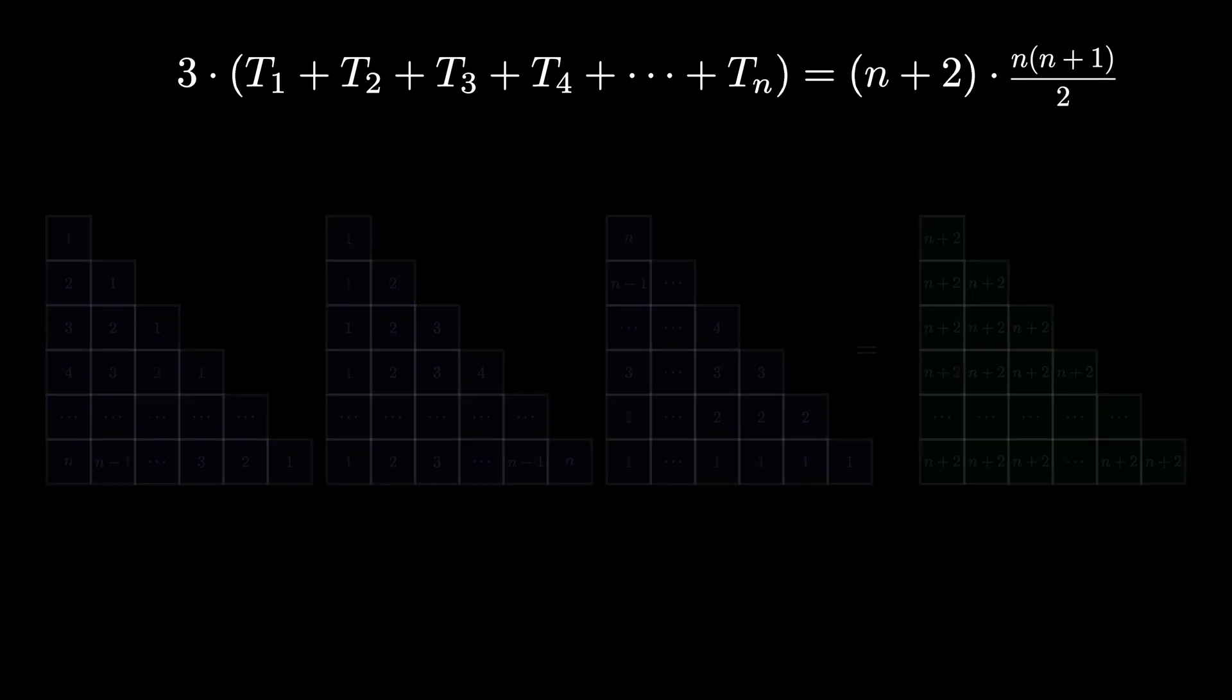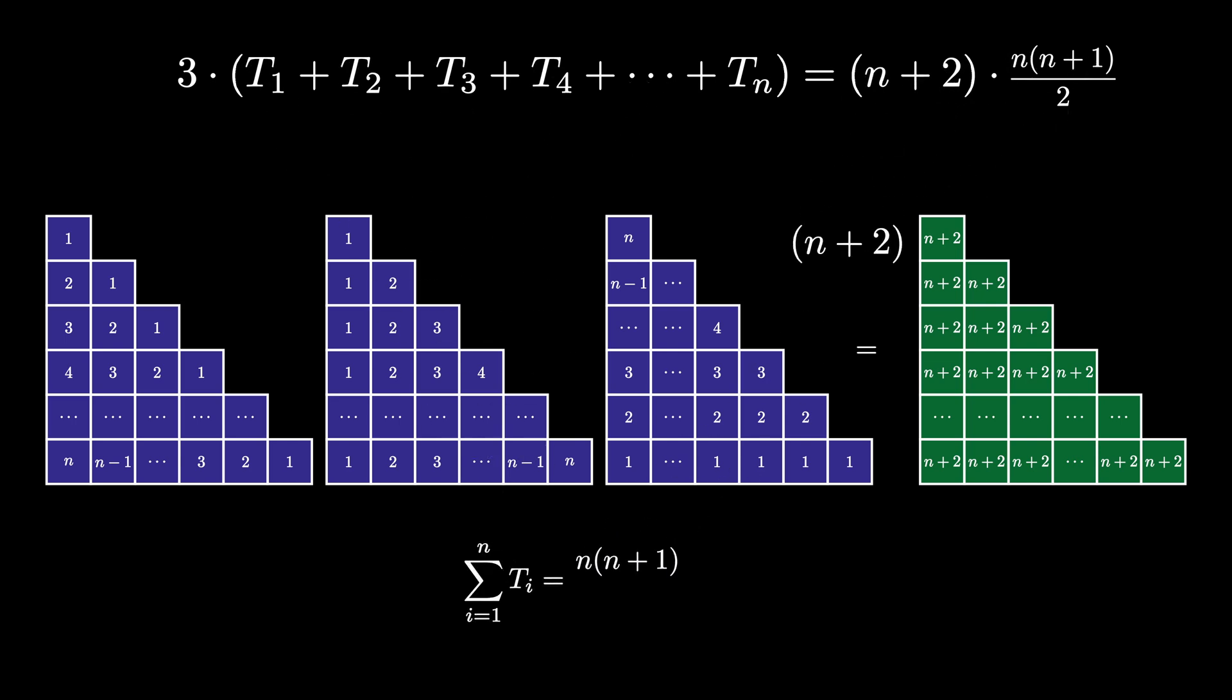So we used 3 stacks of triangular arrays with a triangular number of tokens in each row to see that the sum of the first n triangular numbers is n times n plus 1 times n plus 2, all divided by 6.